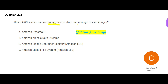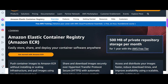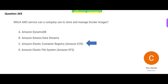We use Elastic Container Registry (ECR), so we can easily store, share, and deploy container software. Docker images are images of container software only. DynamoDB is a NoSQL database — you cannot store Docker images there. Kinesis Data Stream is a real-time messaging system.